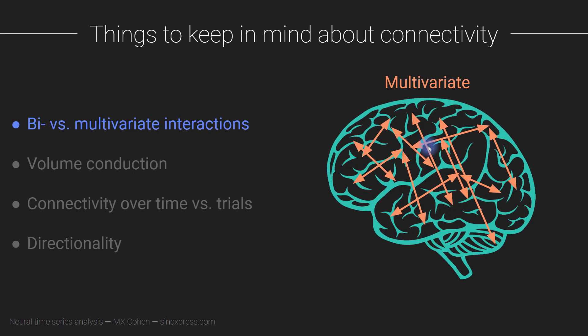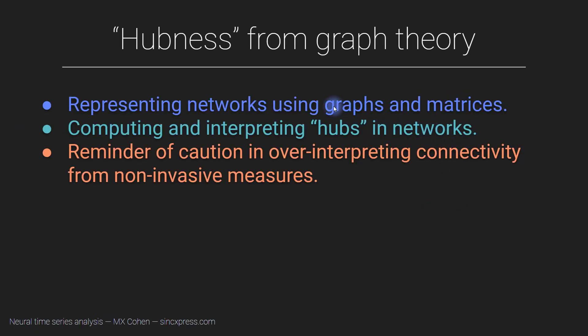But what I'm going to do in this video is introduce you to graph theory and to one particular analysis from graph theory that approaches a multivariate metric of large-scale synchronization. In particular, I'm going to focus on hubness, which is related to a hub - a node in a network that has a lot of incoming and outgoing signaling.